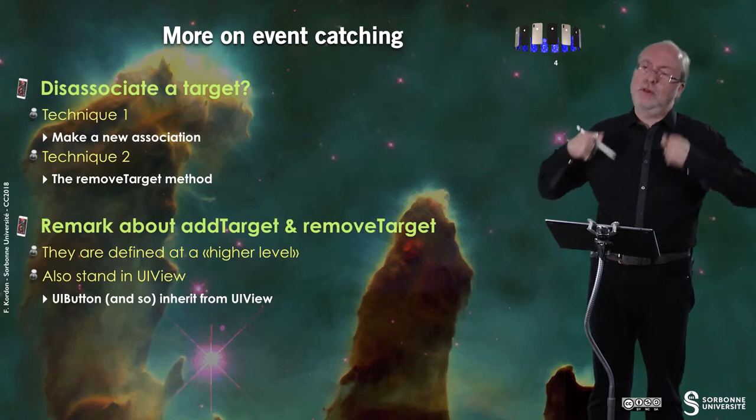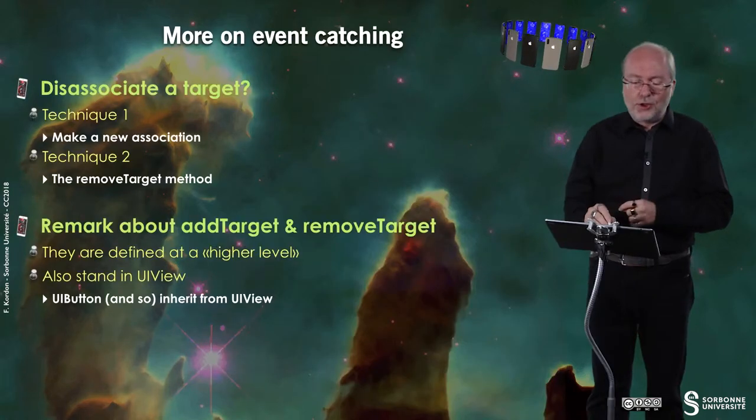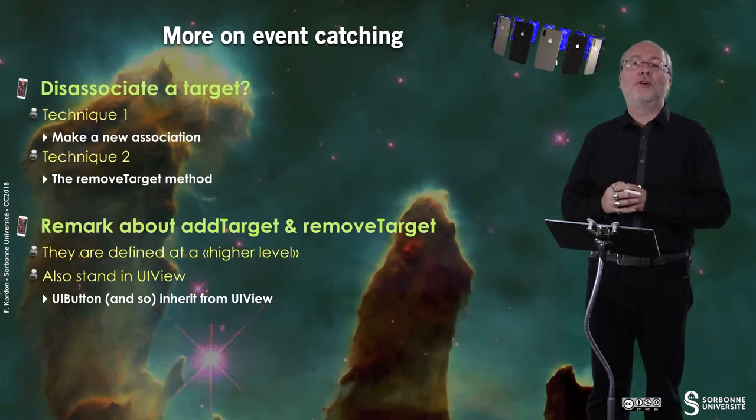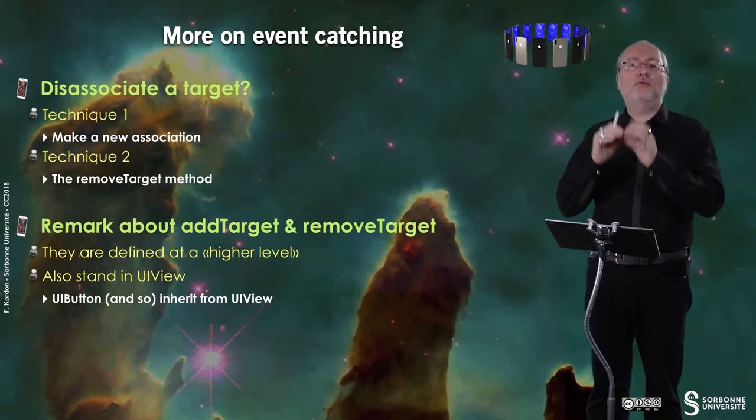During the life of the application, you may de-associate a target or change the target. How can you de-associate a target? First, by making a new association, so the whole previous association will be forgotten — you just invoke addTarget again for the corresponding widget. And the second technique is to remove the target by using the removeTarget method. There is another remark about addTarget and removeTarget: in fact, they are defined at a very high level, and you can also use them in UIView, because they are defined at the level of UIView.